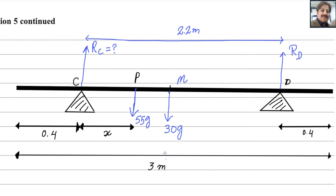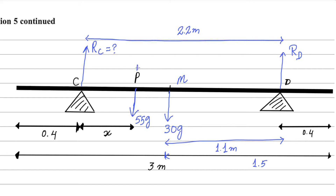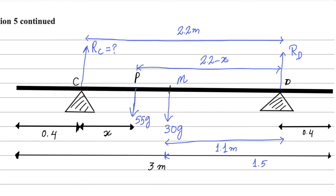We know this is the midpoint, so the distance from A to the midpoint is 1.5 m. The distance of the weight force 30g from D is 1.5 minus 0.4, which equals 1.1 m. For the person's weight force at P, the distance from D is 2.2 minus x, since CP equals x and CD equals 2.2.